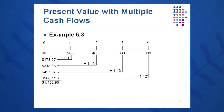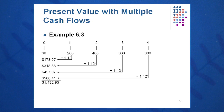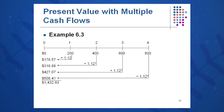Again, a timeline: 0, $200, $400, $600, $800 at the end of each of the next four years. This time I'm going to discount these cash flows back to the left by dividing each by 1.12, 1.12 squared for the $400, 1.12 cubed for the $600, and 1.12 to the fourth for the $800, then add them all up.